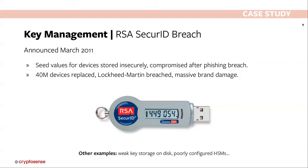You'd think these seed values would be kept very securely. But in March 2011, RSA announced a breach inside their network — through a classical spear phishing technique — and it eventually became clear that seed values had been stolen, requiring them to reissue 40 million devices. A May 2021 Wired magazine article explains in detail the anatomy of how the breach went down and how the attackers got hold of those keys — definitely worth checking out. The people who took the keys were able to make fake logins to systems inside Lockheed Martin, which had very sensitive intellectual property, causing massive brand damage to RSA.